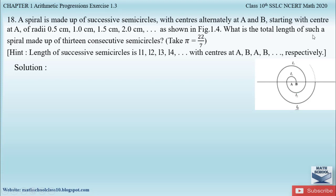So what is the total length of such a spiral made up of 13 consecutive semicircles? In the figure they have shown only four semicircles, but here we have to calculate the length of the spiral made up of 13 such consecutive semicircles.